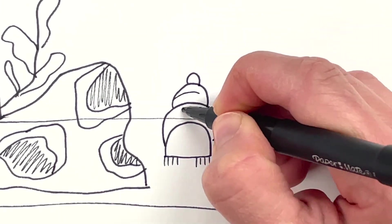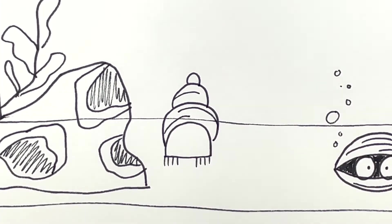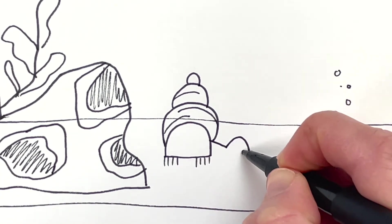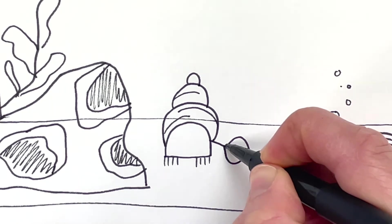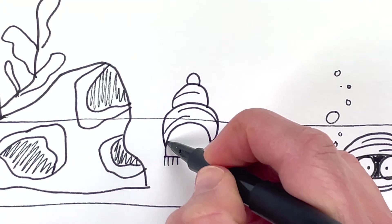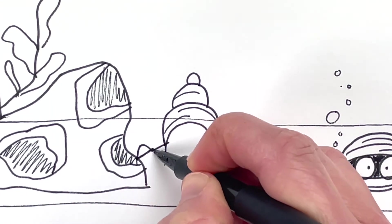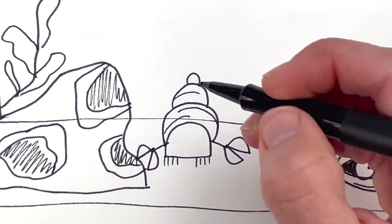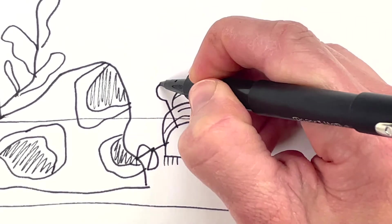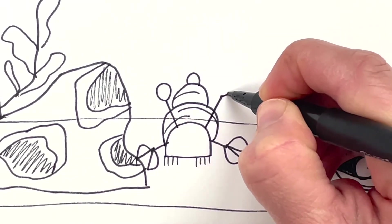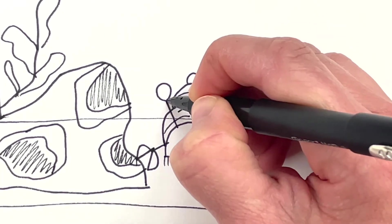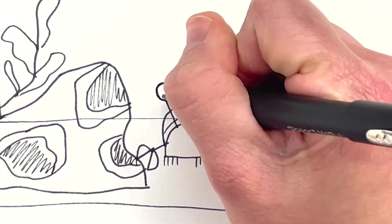And so maybe some little ridge marks on the shell. And some claws. And I think I'm going to give him some really big eyes. Whoa, what happened to this eye? Sorry. Sorry, hermit crab.